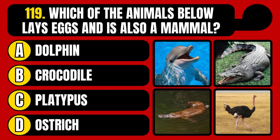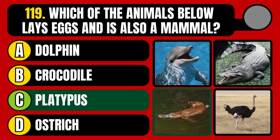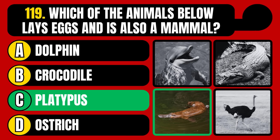Which of the animals below lays eggs and is also a mammal? Dolphin, crocodile, platypus, or ostrich? The correct answer is option C, platypus.